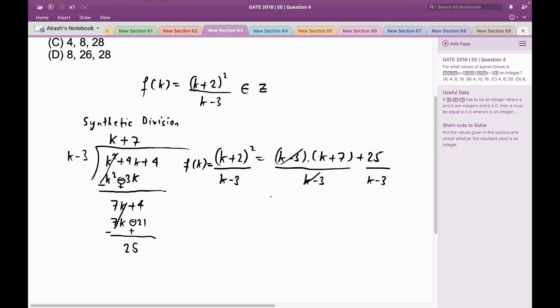On the right-hand side I would have k+7 plus 25 divided by k-3. So f(k) would equal k+7 plus 25/(k-3). Now the advantage of writing the dividend in such a format is that for all values of k which belong to the set of integers, k+7 is going to be an integer. Now I only have to make the right side fraction 25/(k-3) an integer.